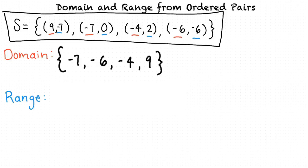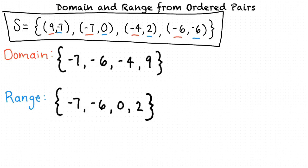Our final answer for the domain and range of relation s would look like this. The domain equals {-7, -6, -4, 9}, and the range equals {-7, -6, 0, 2}.